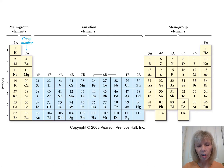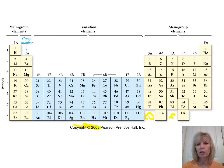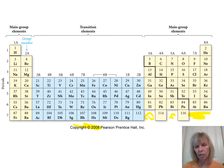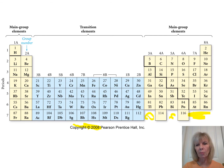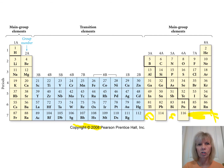An older periodic table from 2008 still shows empty boxes for undiscovered elements. The periodic table was an amazing guide for chemists — for example, they could predict that a synthesized element would have similar properties to the one above it and an atomic number greater than the one next to it.